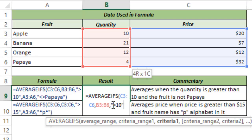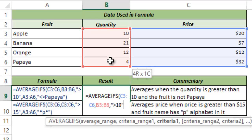Always remember that in functions such as AVERAGEIF, SUMIF, and COUNTIF, whenever you type a criteria that uses a mathematical operator such as greater than, less than, equal to, or not equal to, that criteria should always be within double quotes. So my criteria1 is that the quantity should be greater than 10.